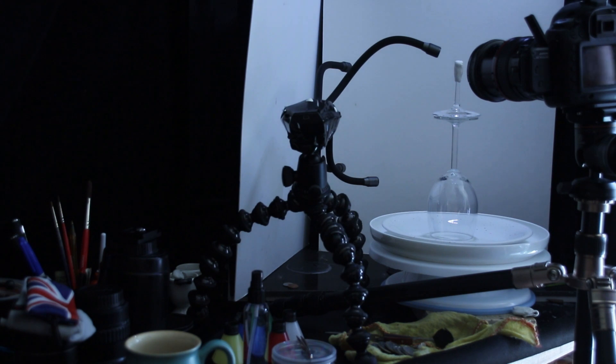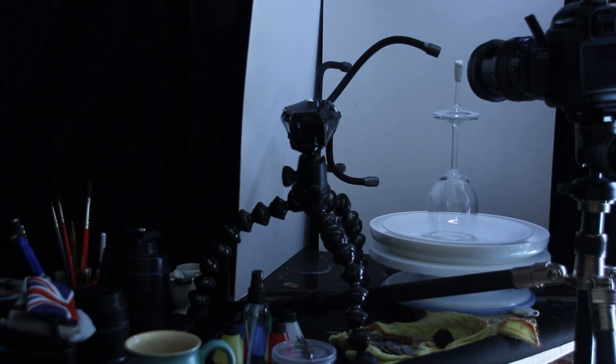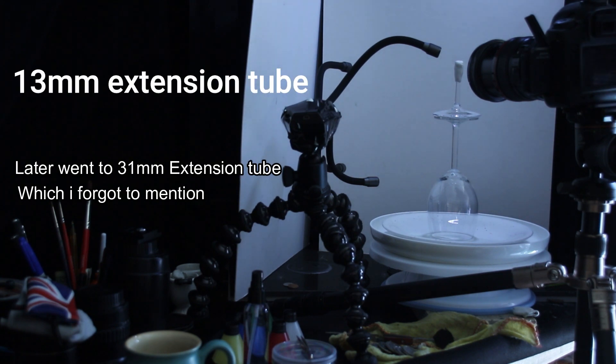The Adaptalux lighting system - I'll be using a red, blue, and green arm for this and a white. I have the filters down here. Camera of course. I'm using a 24-105 lens with an extension tube on it.